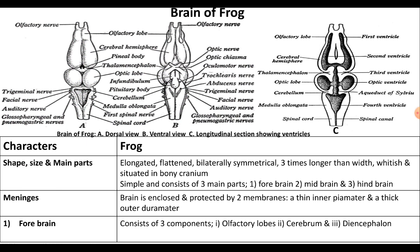Brain of frog: When you see the size and shape of the brain of frog, it is found to be elongated, flattened, and bilaterally symmetrical — meaning when the brain is longitudinally cut into two parts, it results in equal halves. The brain is three times longer than its width. It is whitish in color and situated in the bony cranium. The brain of frog is very simple and consists of three main parts: forebrain, midbrain, and hindbrain. The brain is well protected and enclosed by two membranes called the meninges — a thin inner pia mater and a thick outer dura mater.